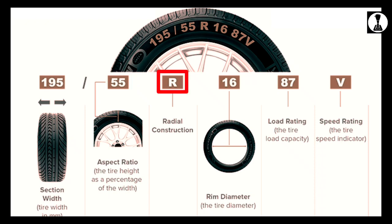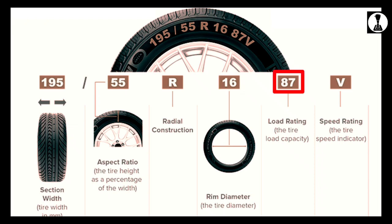R indicates tire construction. Tire construction could be various types like bias ply, belted bias ply, and radial ply. This is the radial ply construction. 16 is the rim diameter in inches. 87 is the load index, which indicates the load capacity of the tires.